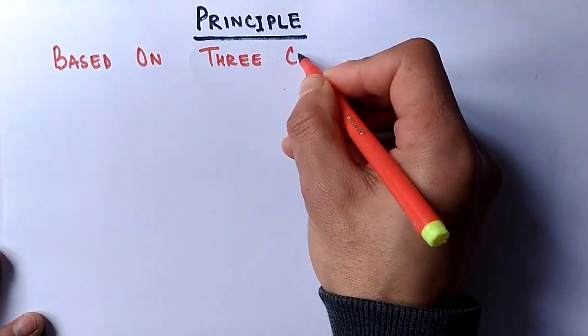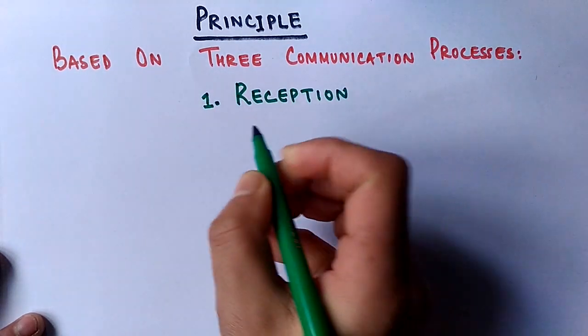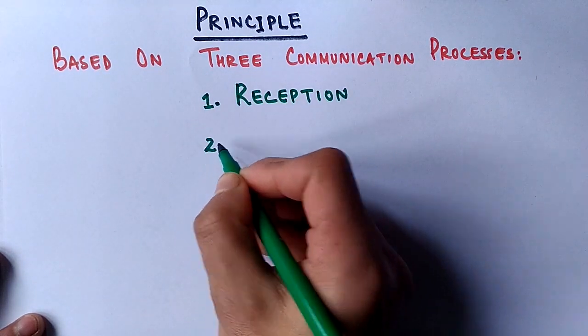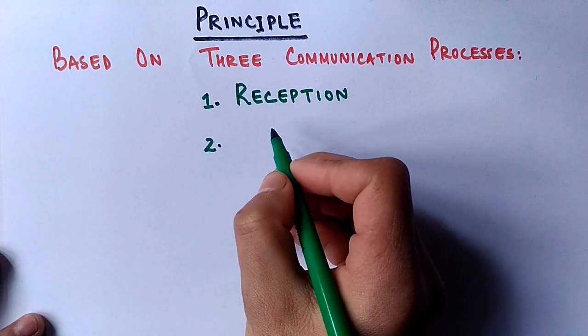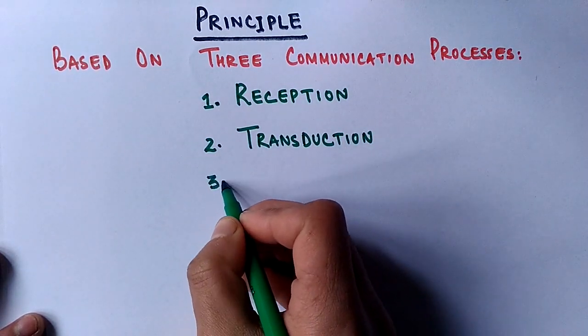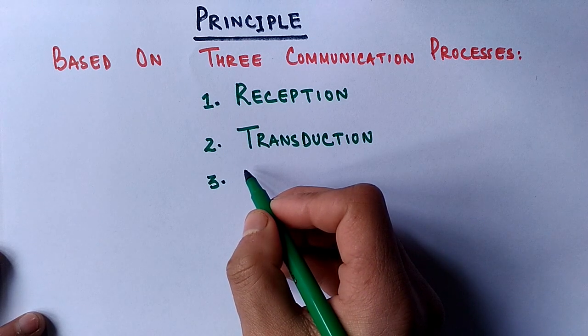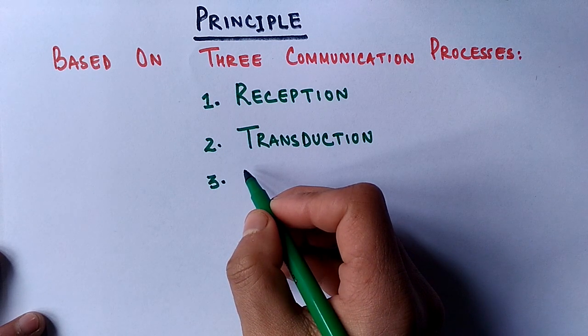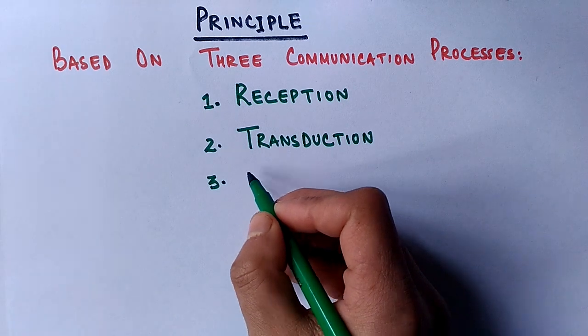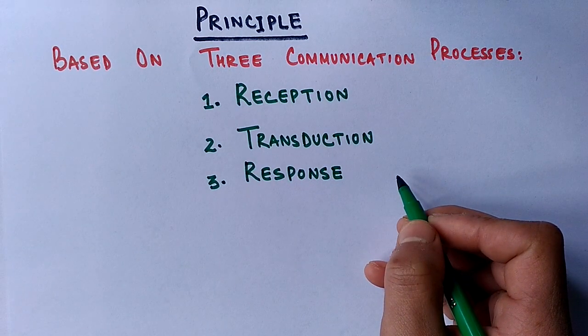We see here it's based on three core communication processes. First one is called reception, where the surface membrane or intracellular receptors receive signal from extracellular molecules. Second is signal transduction, where a modified signal gets transduced towards its target point, mainly the nucleus of the cell. And ultimately we have cellular response, which may be activation, deactivation, or modification of certain cellular processes.